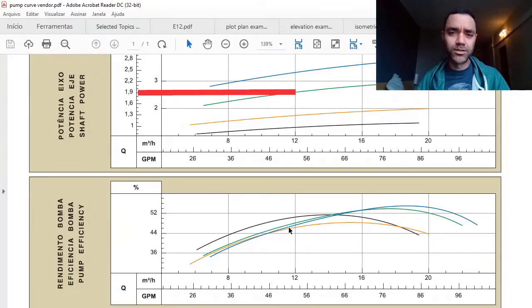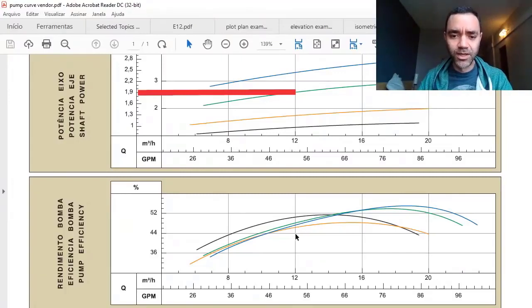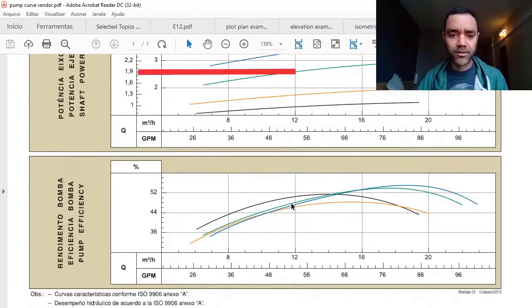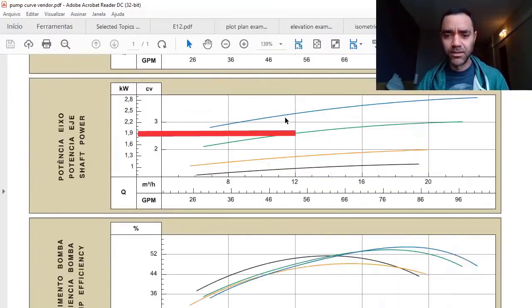When we talk about smaller pumps, sometimes the suppliers add the pump efficiency already considering the motor efficiency. If we use this information and feed it to Aspen HYSYS, you're able to get the power based on this information of head, flow, and efficiency, and verify that everything is talking to each other.